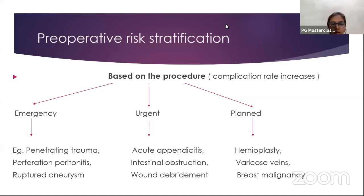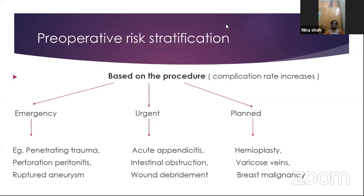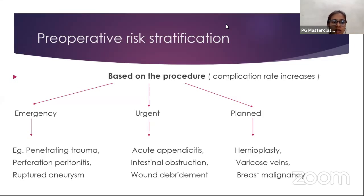Preoperative risk stratification can be based on the procedure or on the health status of the patient. Based on the type of procedure, the complication rate increases. In emergency procedures such as penetrating trauma, perforation peritonitis, or ruptured aneurysm, the complication rate is highest. Urgent surgeries like acute appendicitis, intestinal obstruction, or wound debridement allow some time from admission to OT. In planned elective procedures like hernioplasty, varicose veins, or breast malignancy, there is more time for appropriate preoperative evaluation, so the complication rate is lowest.